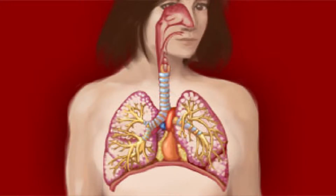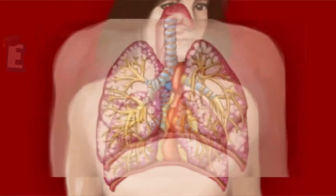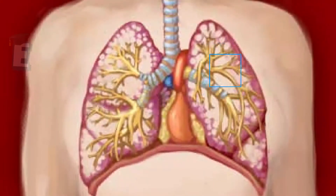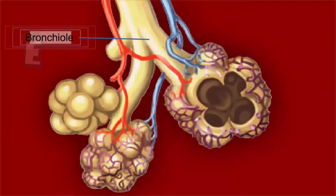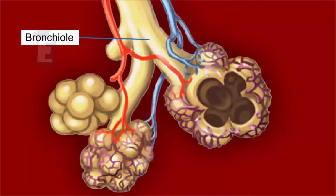At the end of trachea, there is an intersection of bronchi, one bronchus to the left and the other one to the right. Bronchus ends with many intersections of bronchioles. Bronchiole itself means the branch of bronchus.